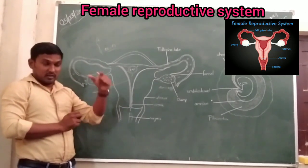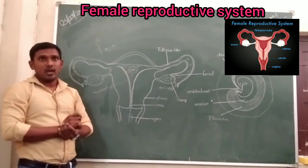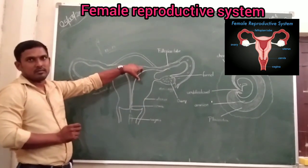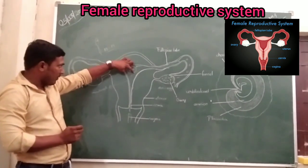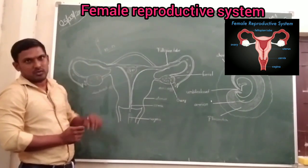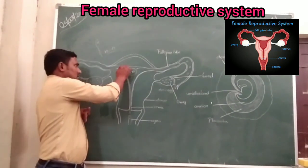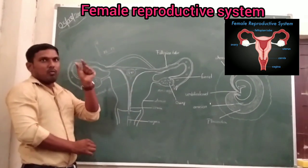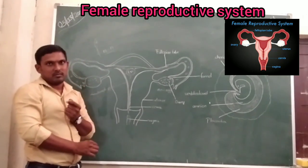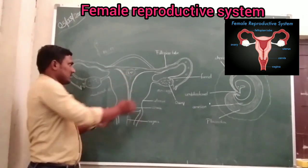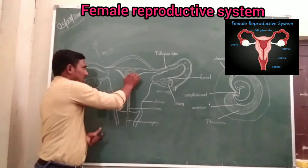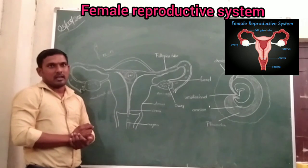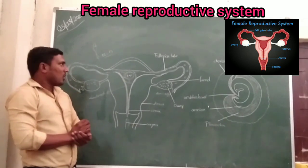After the third month of pregnancy, the embryo is called a fetus. The embryo forms in the uterus and touches the walls of the uterus. After maturation, these walls are always soft, moist, and smooth. When the embryo touches the walls, this process is called implantation.